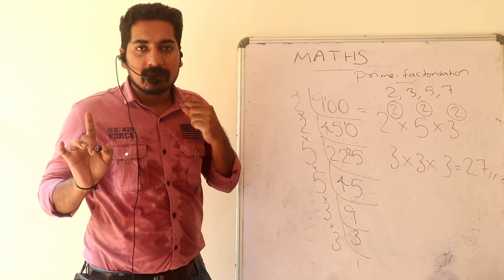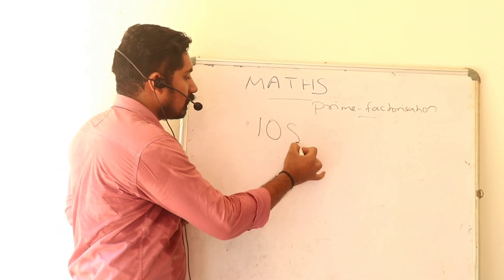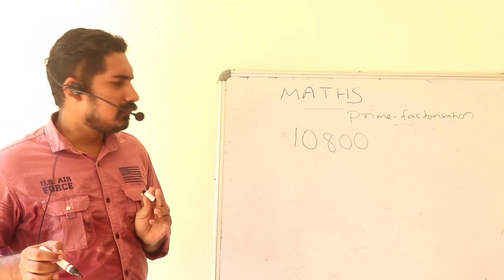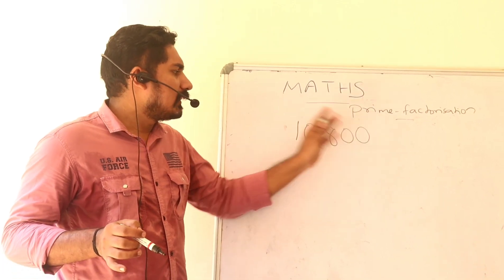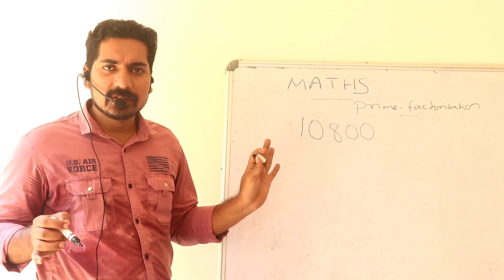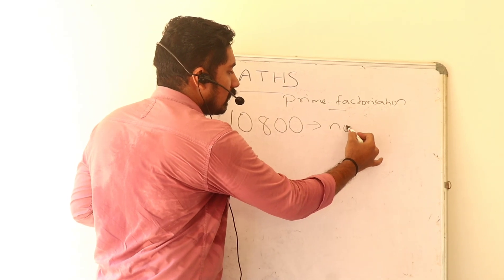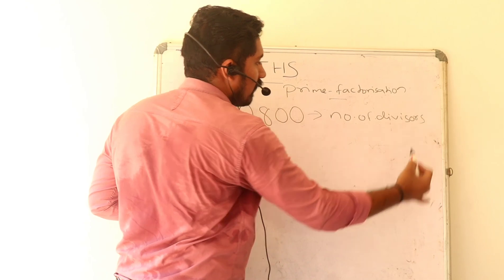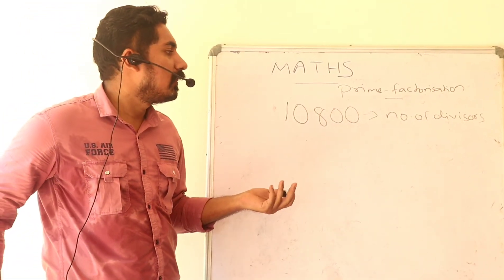Is it clear? Are we ready? Let's take a look at the next question. Find the number of divisors and factors.